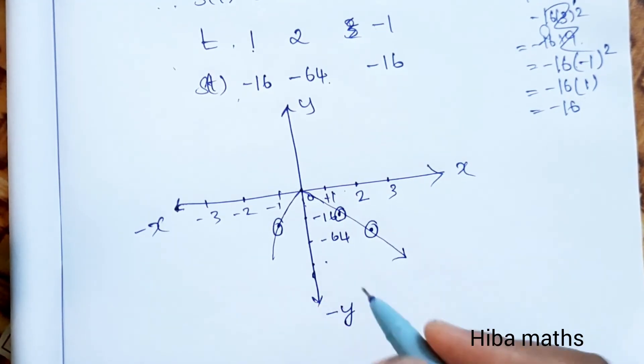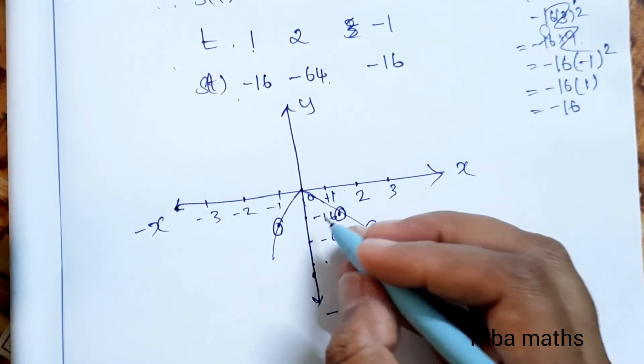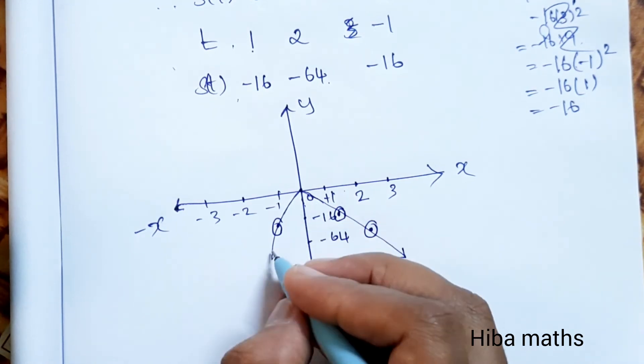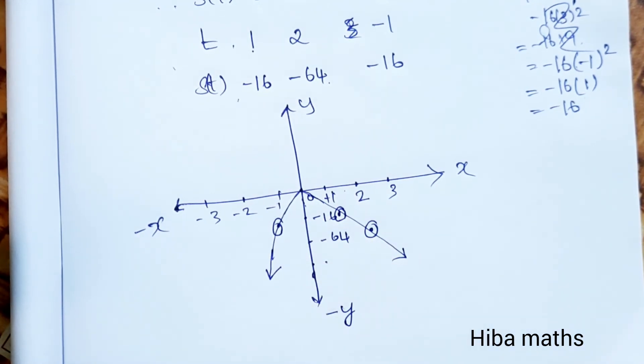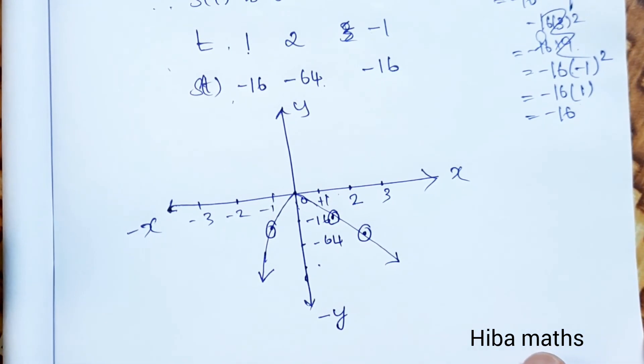The graph opens downward because the values are negative. If we had positive values, the graph would open upward. Thank you so much for watching.